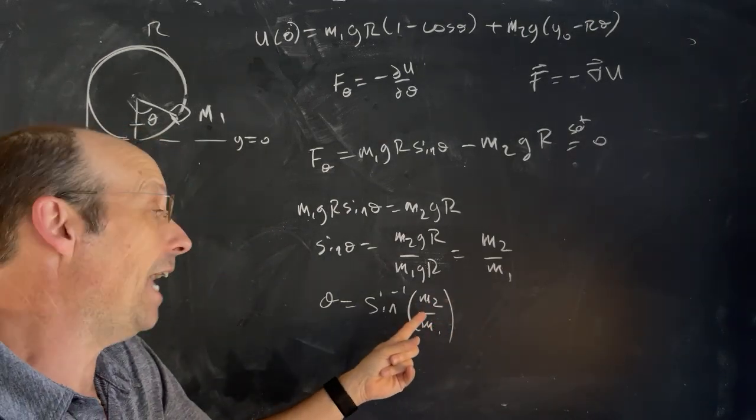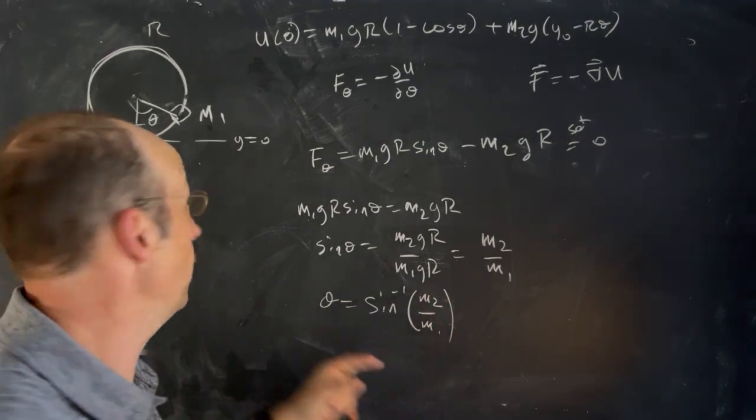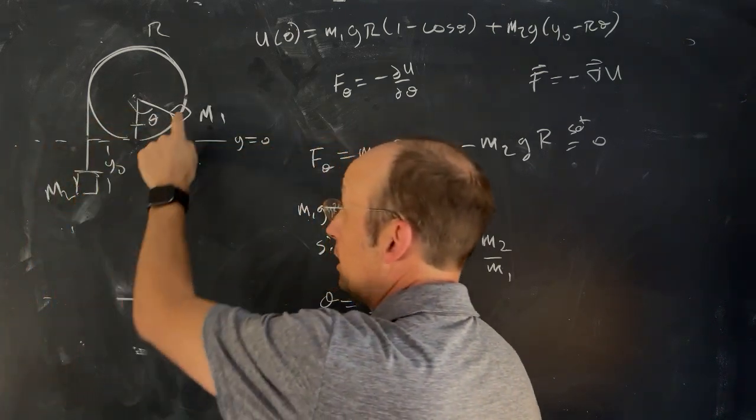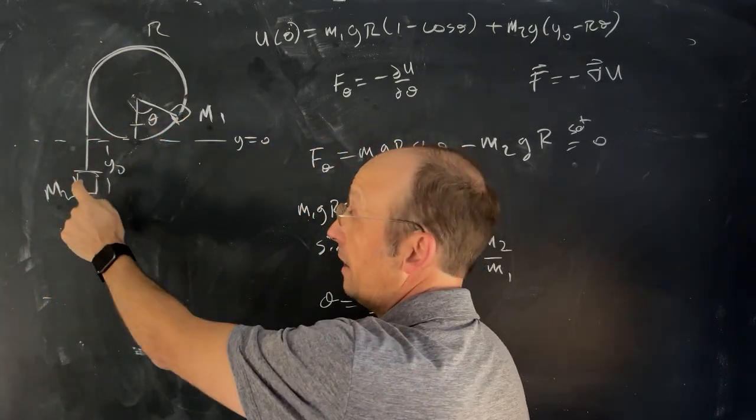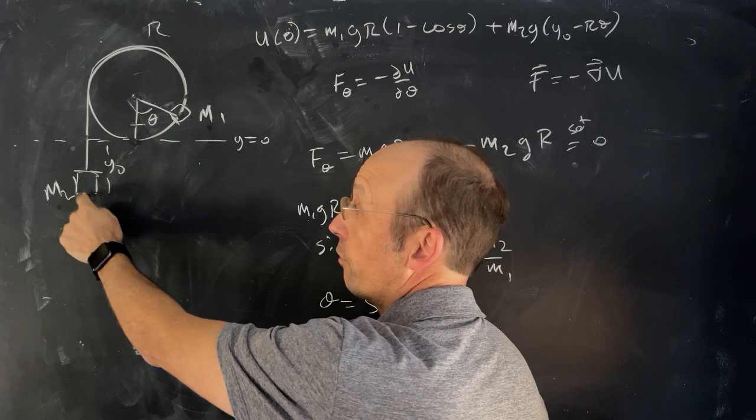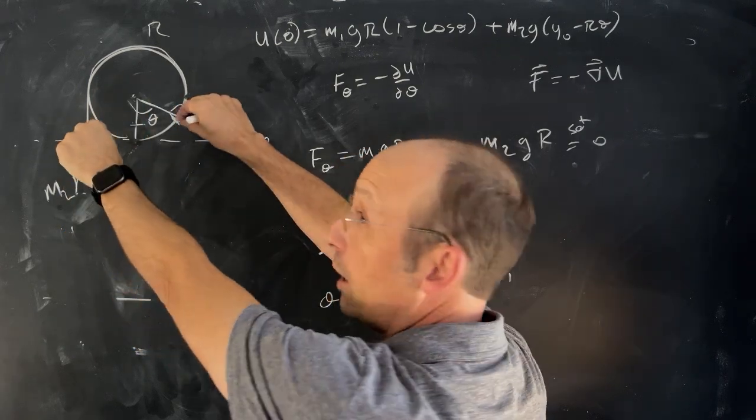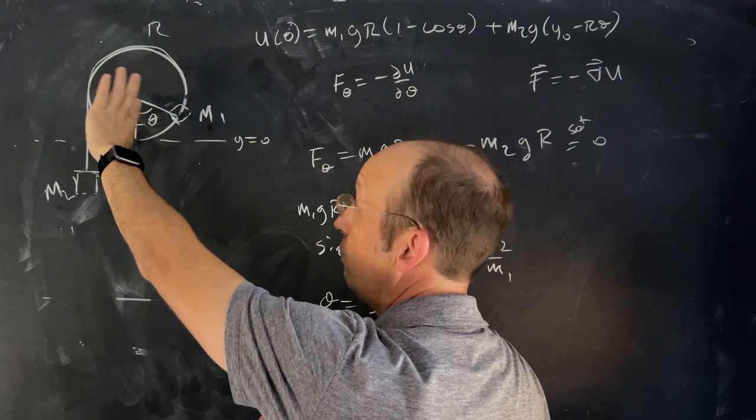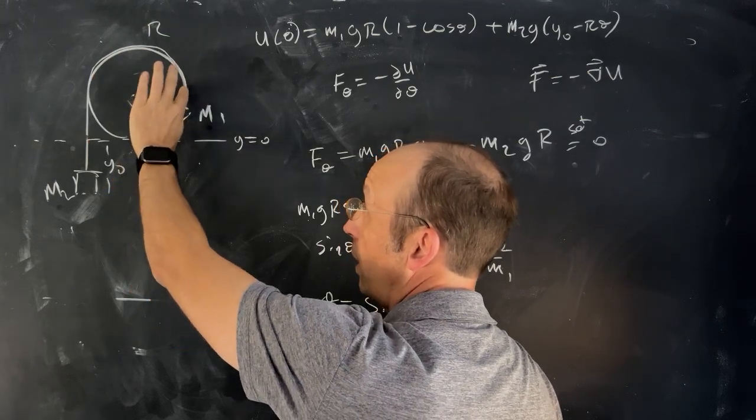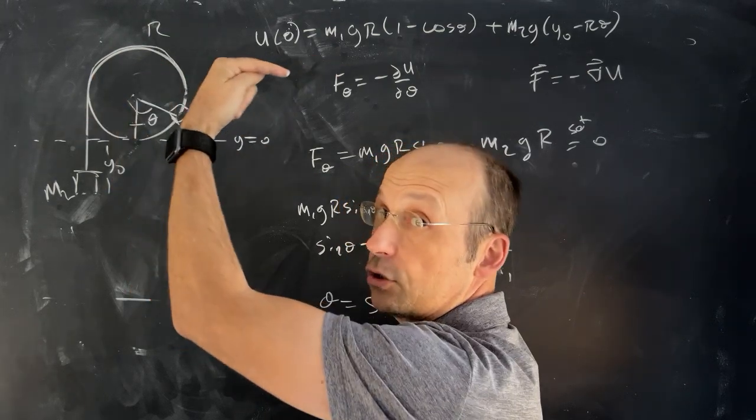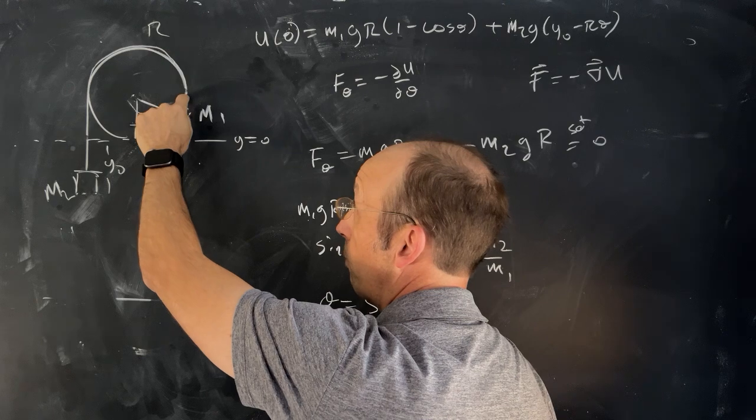And you see right there that I have to have M2 less than M1. So this mass has to be less than that one. I had this as 100 grams and 200 grams. Because the torque, it's going to be in equilibrium when the torques are equal. This one, about that point, as it moves higher and higher, increases its torque arm. So it's going to have more and more torque.